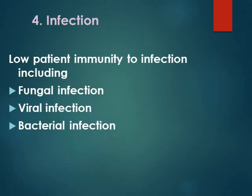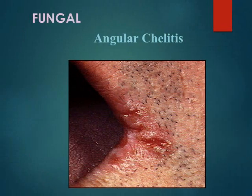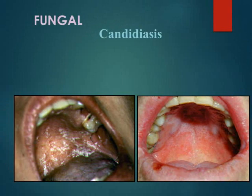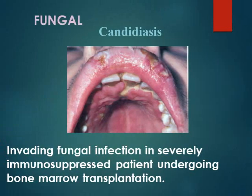Infection: low patient immunity leads to susceptibility to infection, including fungal, viral, and bacterial infection. Angular cheilitis is an example of fungal infection. Candidiasis is another example of fungal infection, and in immunocompromised patients, the Candida infection can be very severe.